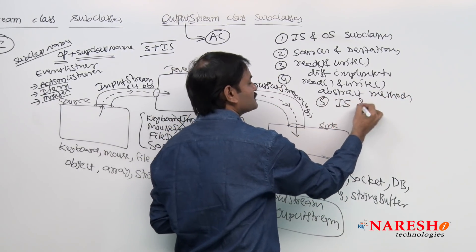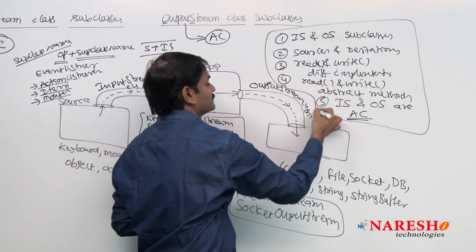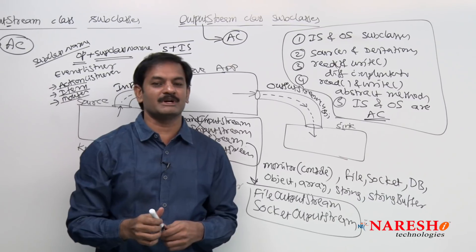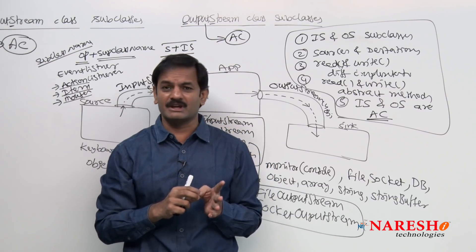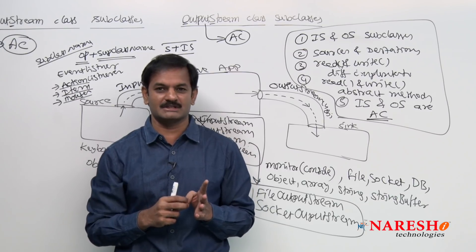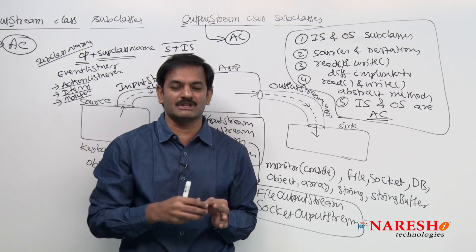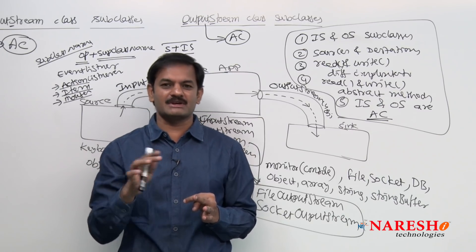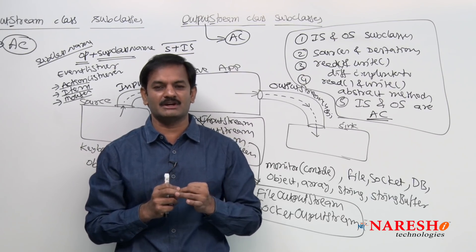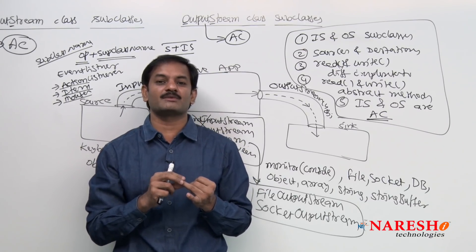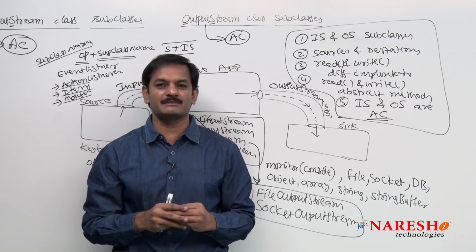Point 5: input stream class and output stream class cannot be concrete classes. Because read and write are abstract methods, the class that contains both abstract methods and concrete methods together is abstract class. Hence, input stream and output stream classes are abstract classes. These are the key points from this session — I hope everyone got clarity on different sources and destinations, and why input stream and output stream classes contain several subclasses.